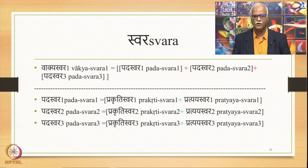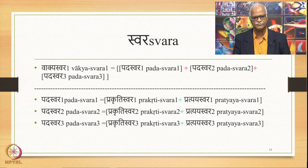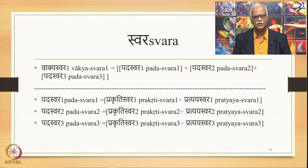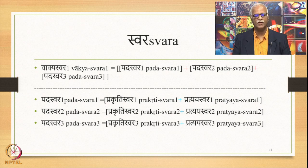A Vakya is composed of three Padhas and each Padha is composed of Prakrityartha and Pratyayas. The red plus sign indicates the combination of Padhas, and the blue plus sign between Prakrityartha and Pratyayas indicates the exclusive nature of the Padha. Something similar also happens to Swara or Accent. There is Vakya Swara which is made up of three Padhaswaras, and each Padhaswara is made up of Prakrityaswara and Pratyayaswara. All three layers of Artha, Padha, and Swara correspond with each other.